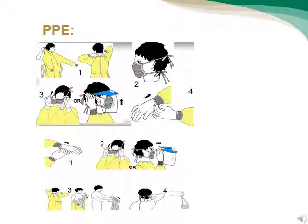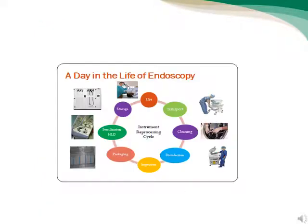As we can see in this picture, an instrument processing cycle starting from: using, transport, cleaning, disinfection, inspection, packing, sterilization or HLD, and finally storage. مراحل معالجة المناظر تبدأ من الاستخدام، النقل، التنظيف، التطهير، الفحص، التغليف، التعقيم، وأخيراً التخزين.